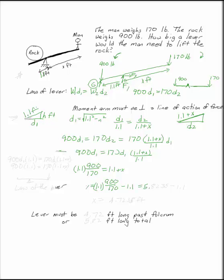So x, the distance that I was looking for, is 4.7235 feet. Now you always want to remember to answer the question. Your lever must be 4.72 feet long past the fulcrum, or 5.82 feet long total.